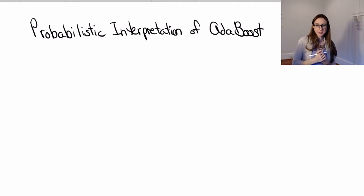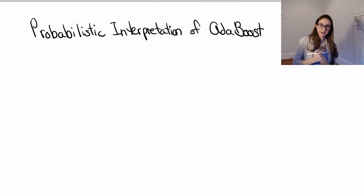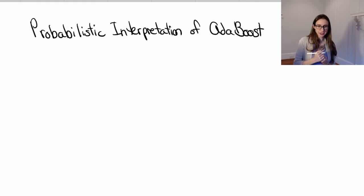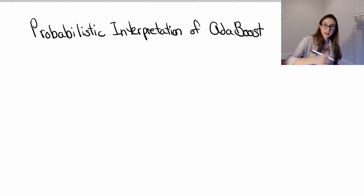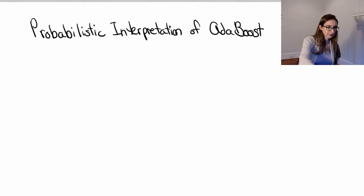I want to give a probabilistic interpretation of AdaBoost that's actually really useful in practice. It gives it the benefit that logistic regression has, in the sense that you get a model for the probability that y equals 1 given x. But I have to derive that from AdaBoost's loss function.